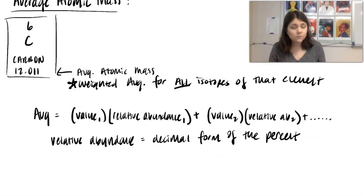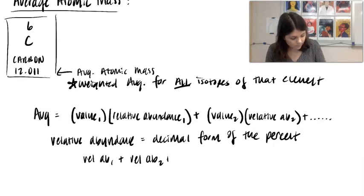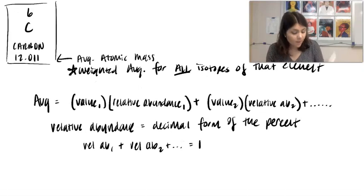Now please note, all of those relative abundances must add up to one. Because if we think about percentages, it's out of 100%.